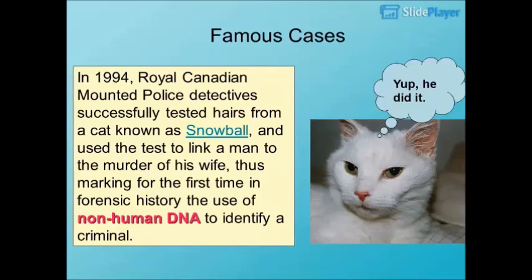In 1994, Royal Canadian Mounted Police detectives successfully tested hairs from a cat known as Snowball, and used the test to link a man to the murder of his wife, marking for the first time in forensic history the use of non-human DNA to identify a criminal.